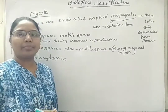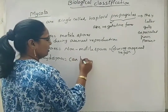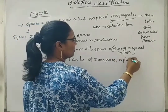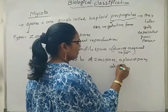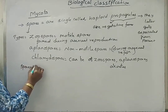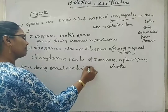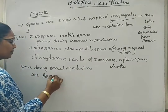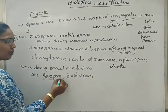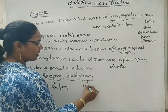Basing on the conditions that are favorable or unfavorable, the type of spores in the case of chlamydomonas differs — they can be zoospores, aplanospores, or echinulates. Spores formed during sexual reproduction are ascospores and basidiospores. Ascospores are formed in sac fungi. Basidiospores are formed in club fungi. You will see in detail about all these types during classification.